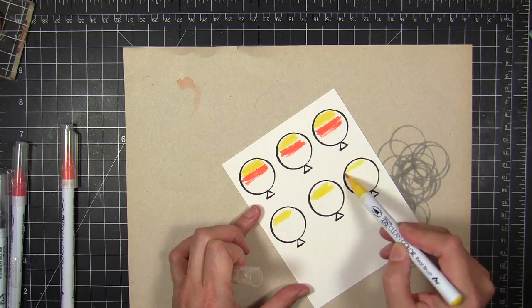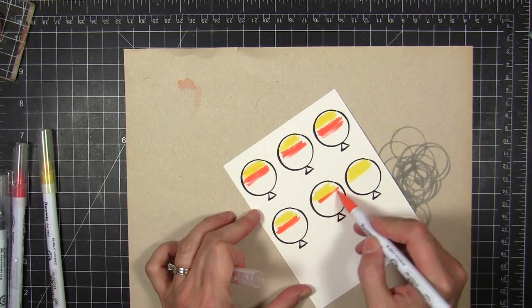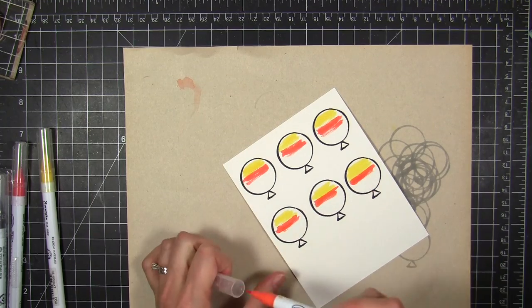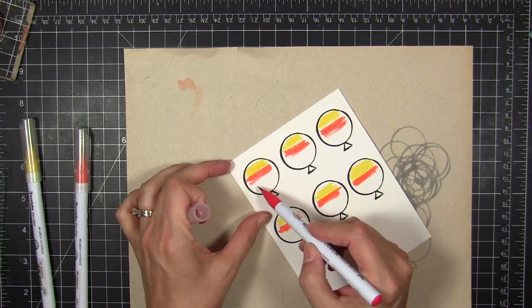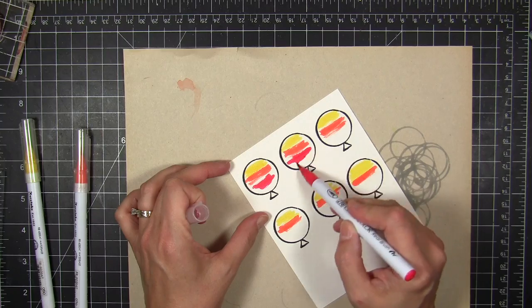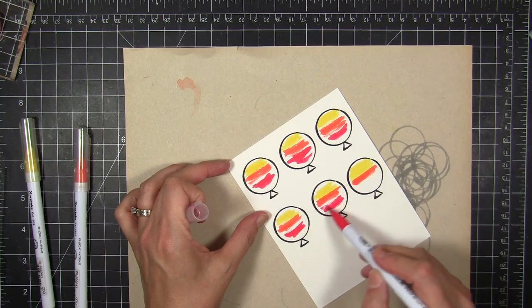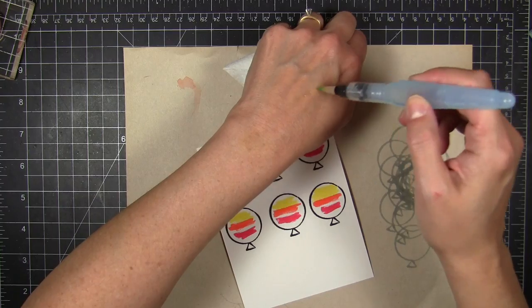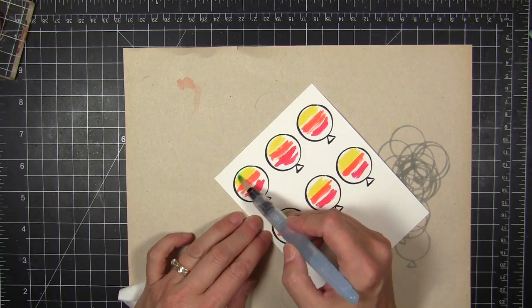So I'm just scribbling and swiping some color. I'm really careful not to mash the tips of my Zig Clean Color Real Brush markers because I find that if you flick it back and forth like you would a real brush, you're not going to mash the ends of your markers. So that's just something to keep in mind.